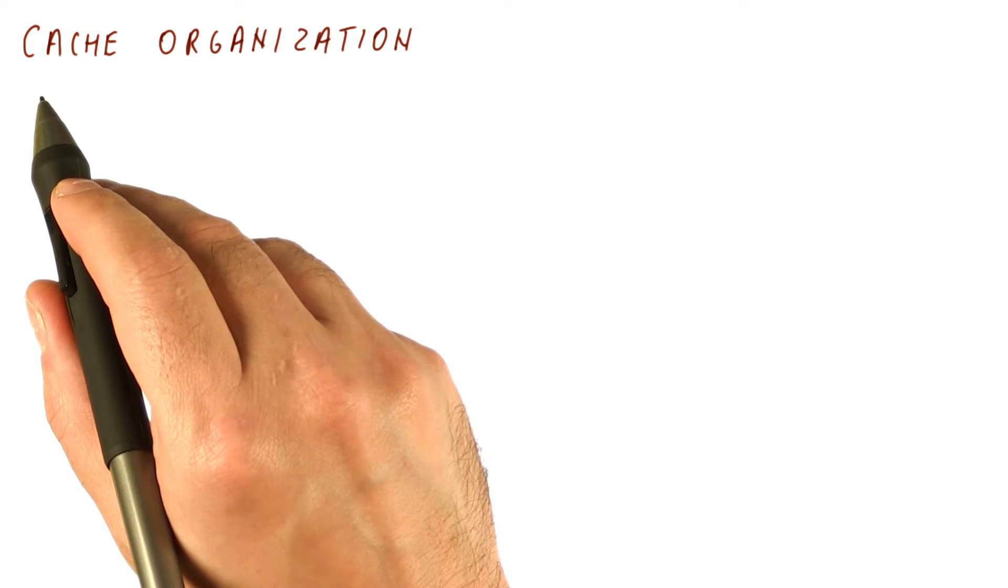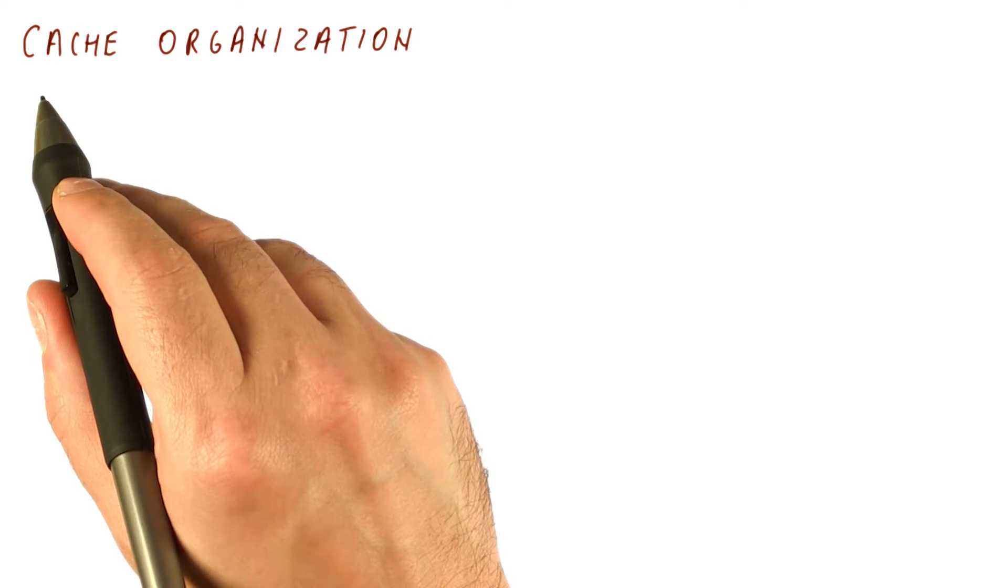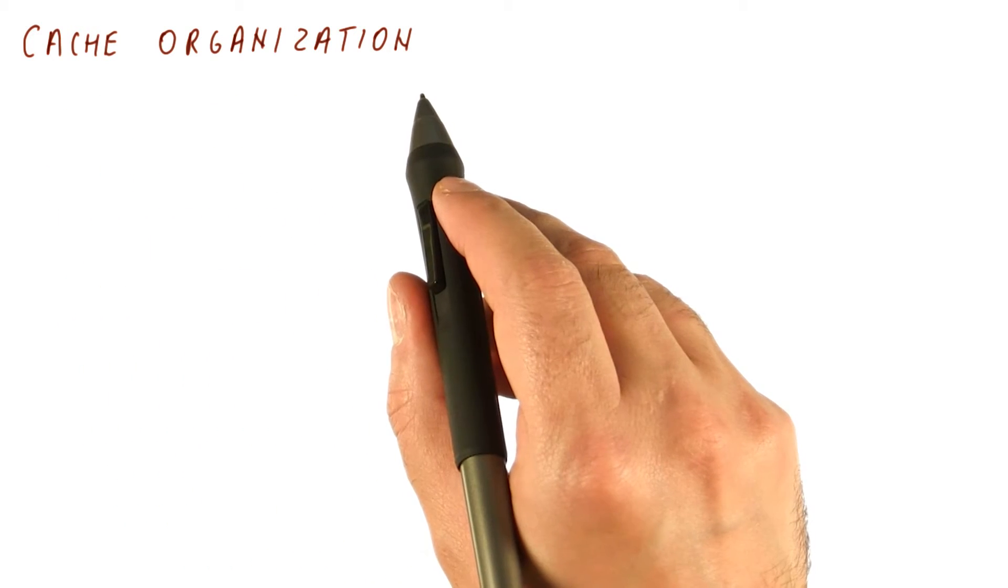Now that we know what the purpose of the cache is and how big approximately it needs to be, let's look at how it is organized internally.